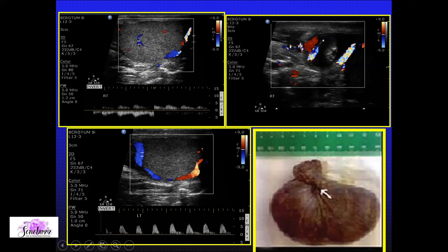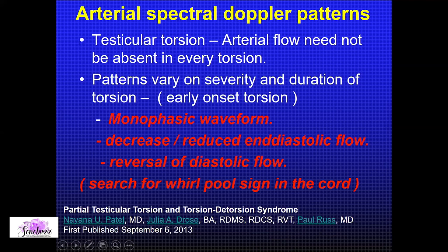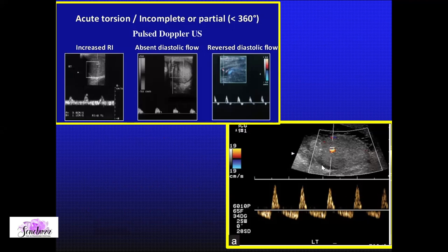Always remember that in every testicular torsion, arterial flow need not be absent. Three patterns to remember: dampened monophasic waveform, reduced end-diastolic flow, or reversal of diastolic flow. If you see any of these, go search for the whirlpool. Even if you don't see the whirlpool — as in a twist-untwist scenario — write this finding in your report and tell the clinician that this testis seems to be undergoing ischemia and needs close follow-up. Cases showing absent end-diastolic flow and reversal are nothing but incomplete torsions or ischemic testes.